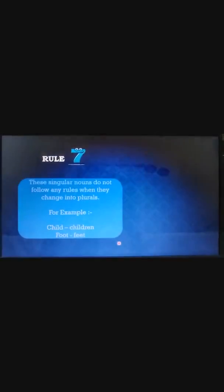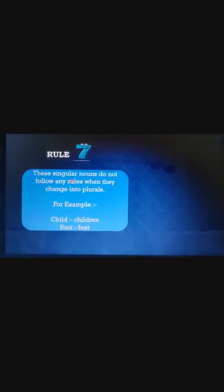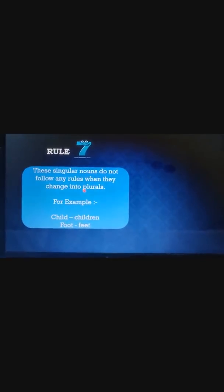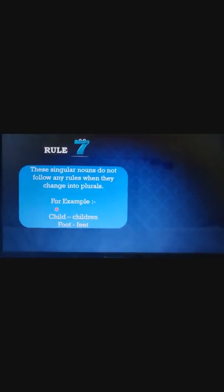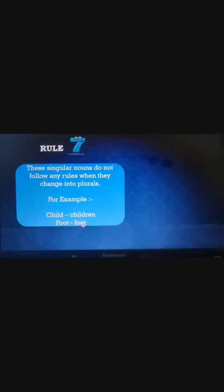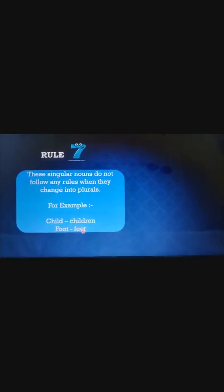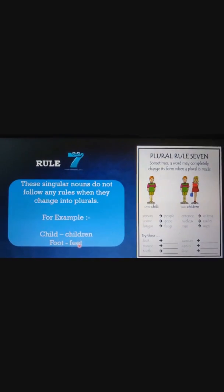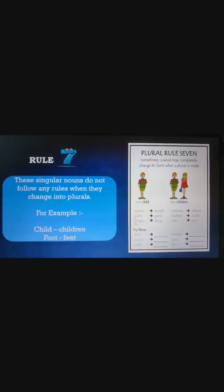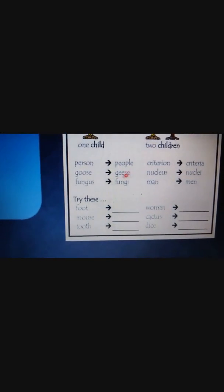Now we move to rule number seven, which states that some singular nouns do not follow any rules when they change into plural — the whole spelling changes. For example: child/children, foot/feet, person/people, goose/geese.